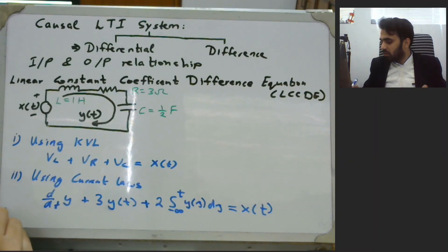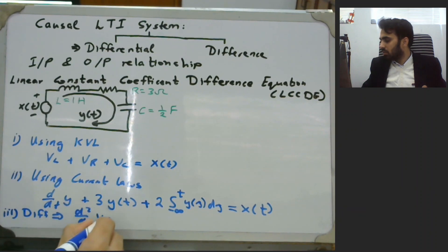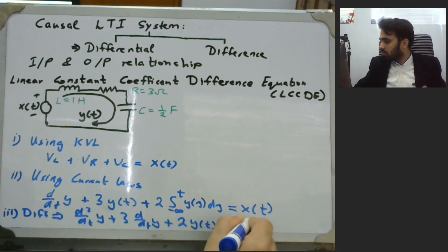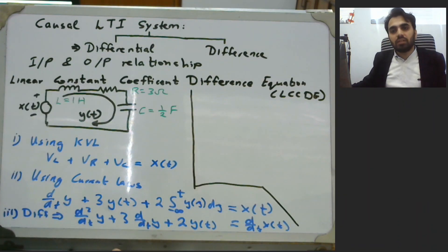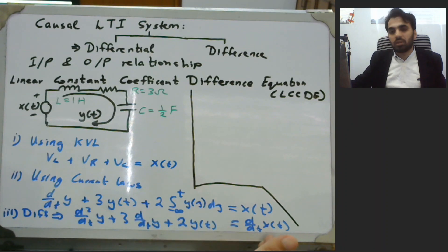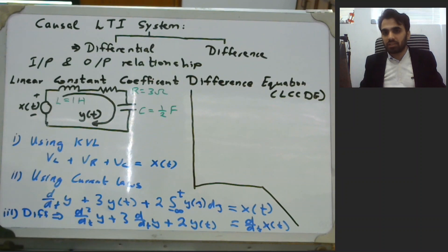We can differentiate one more time, so this becomes the second derivative d²/dt² plus 3·d/dt·y. This gives us an implicit differential equation in which the output is related to the differentials of the output and a differential of input x(t). This is a second order differential equation.